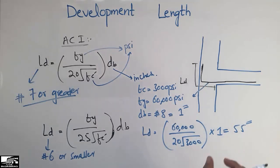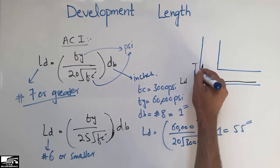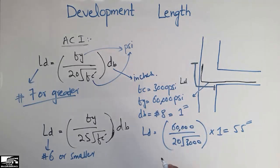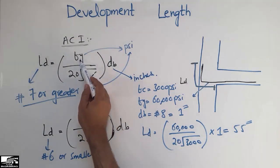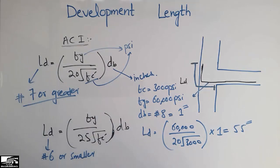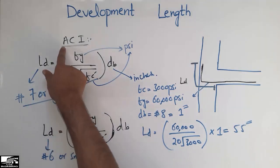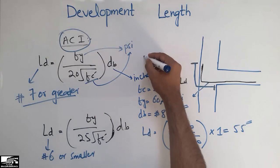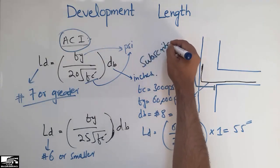So the development length to be provided in this case is 55 inches. This length should be provided to transfer the load from the beam to the column safely. The development length mainly depends on three factors: the grade of steel being used, the strength of the concrete, and the diameter of the bar. Be very careful when calculating the development length for your structural member. This is the development length equation provided by the ACI code. Hope you understand — don't forget to subscribe. Thank you for watching.